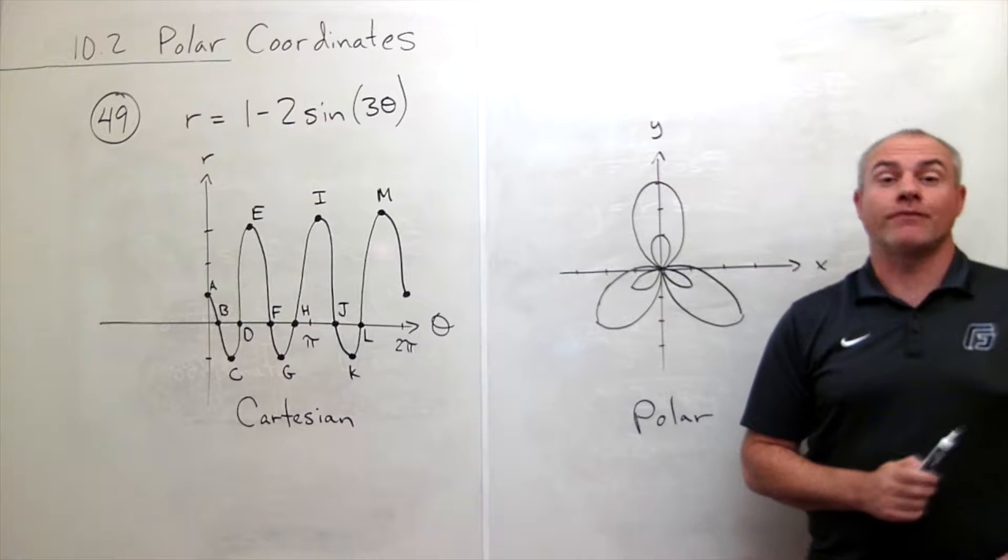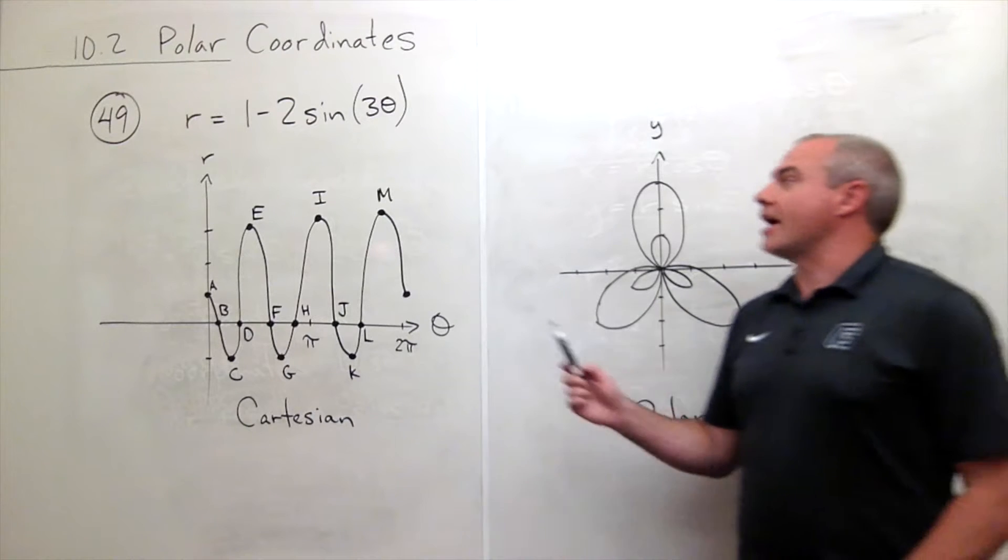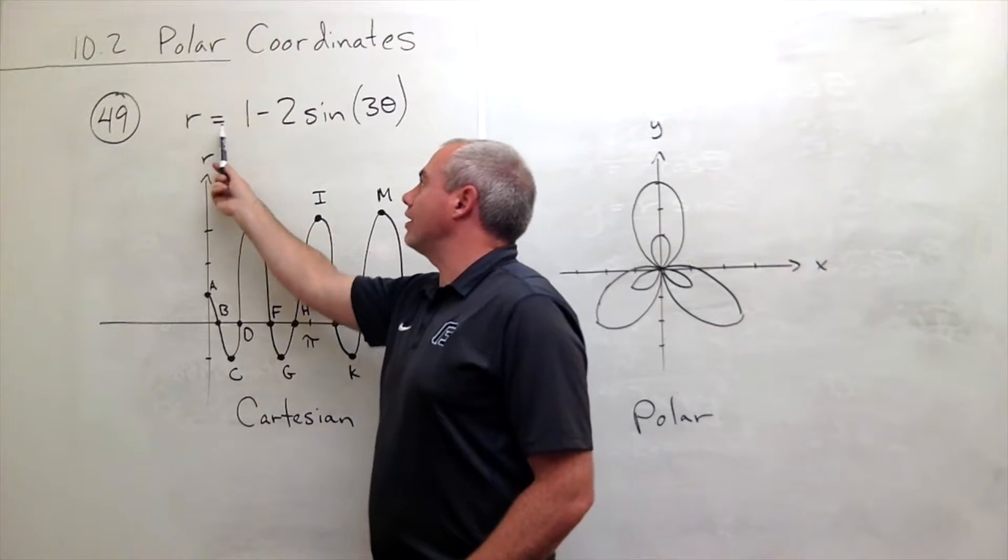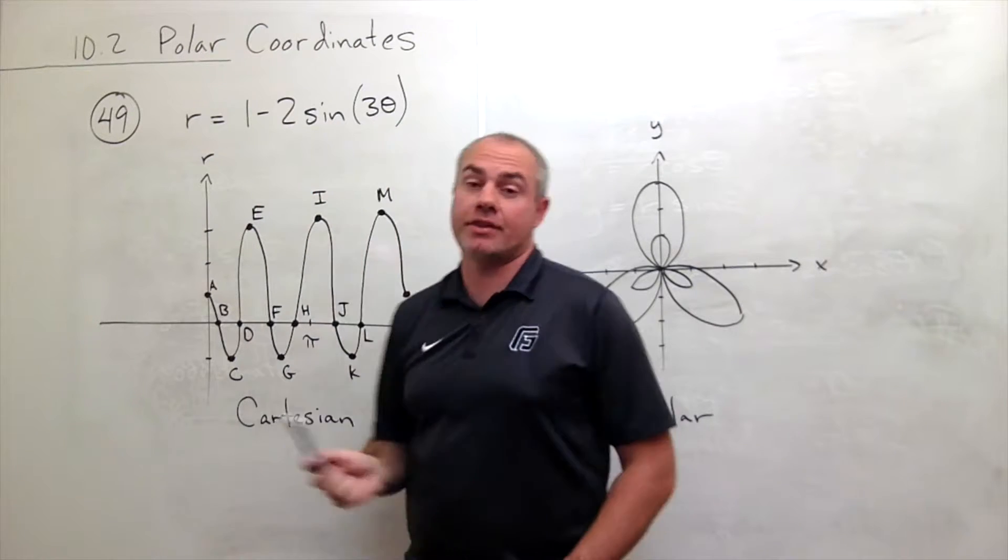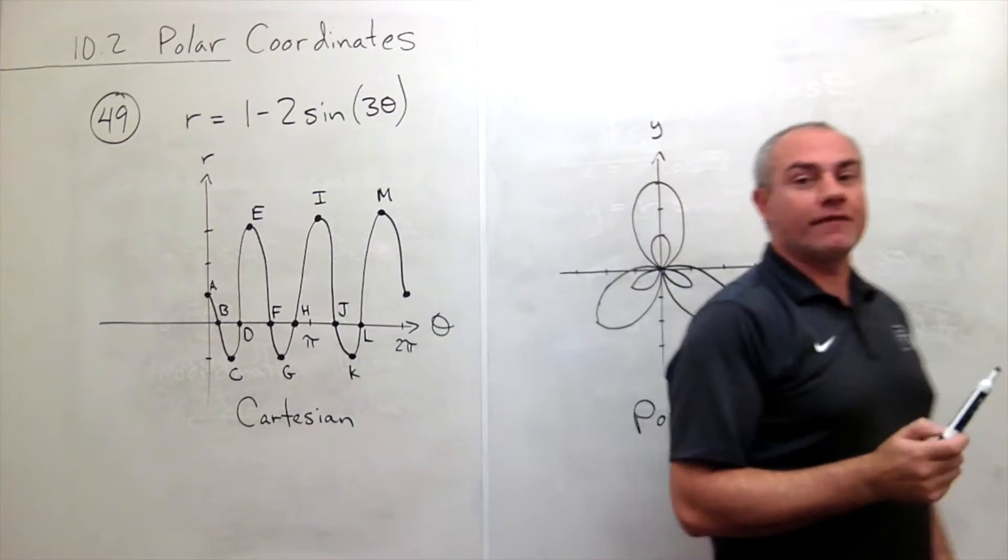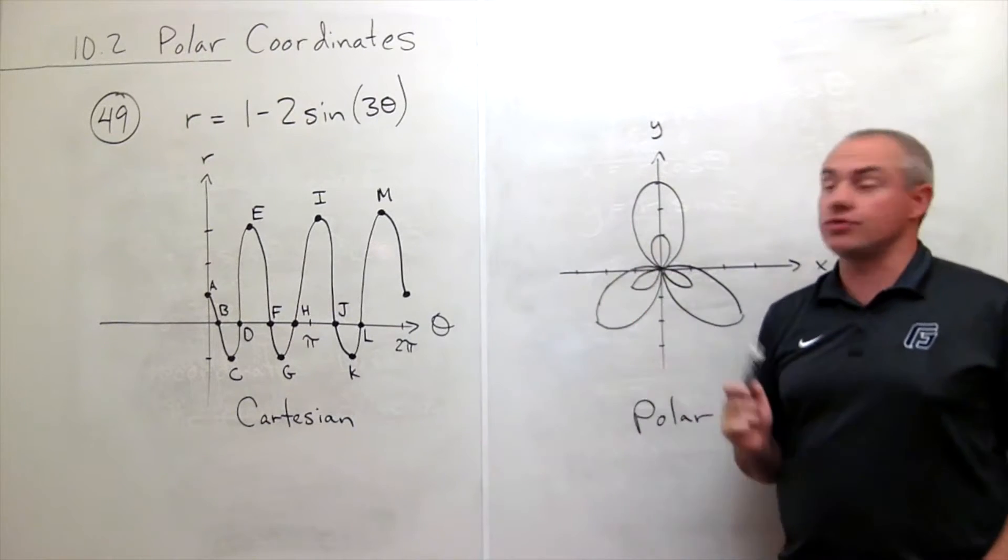I'm the Calculus Professor and today I'll be talking to you about polar coordinates. In problem number 49, I have the polar curve r equals 1 minus 2 sine of 3 theta, and I've graphed that curve in two different ways.